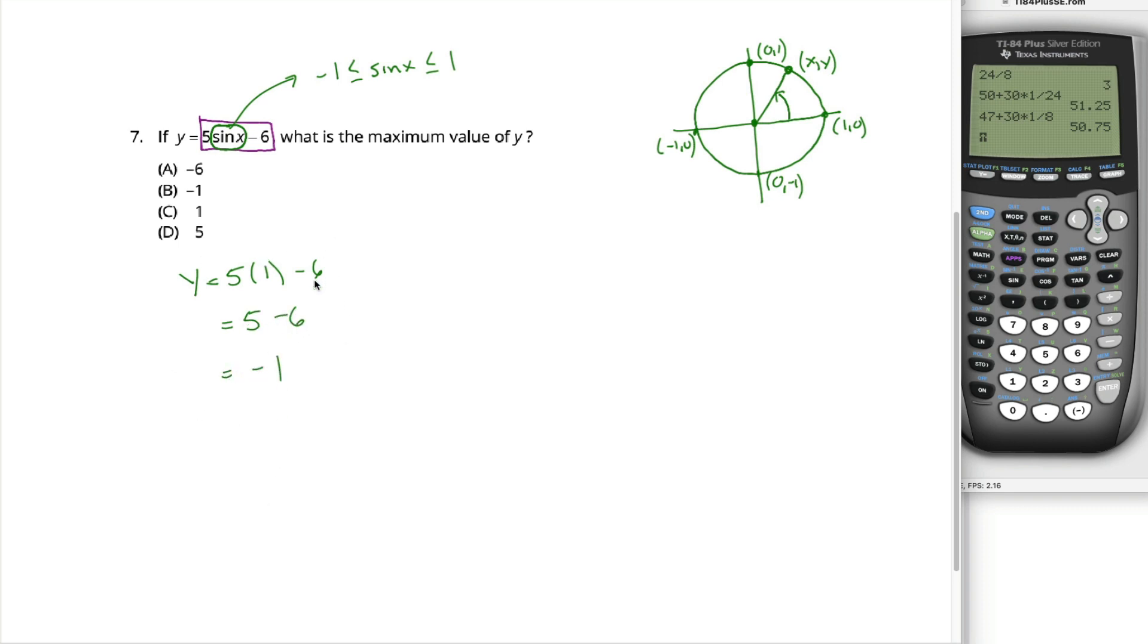I think this algebraic approach is the easiest way to answer this question, but it hinges upon you remembering this key fact about sine, which again is also true for cosine, but is not true for tangent, cotangent, cosecant, or secant, any of the other four trig functions.